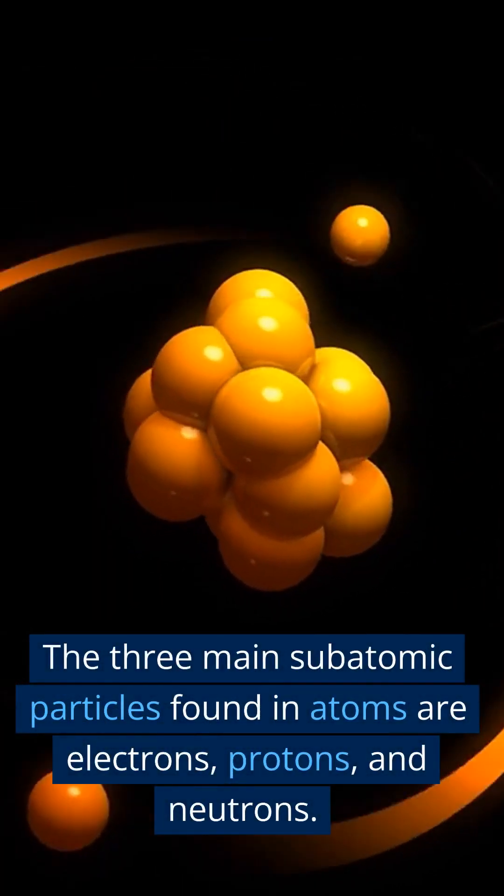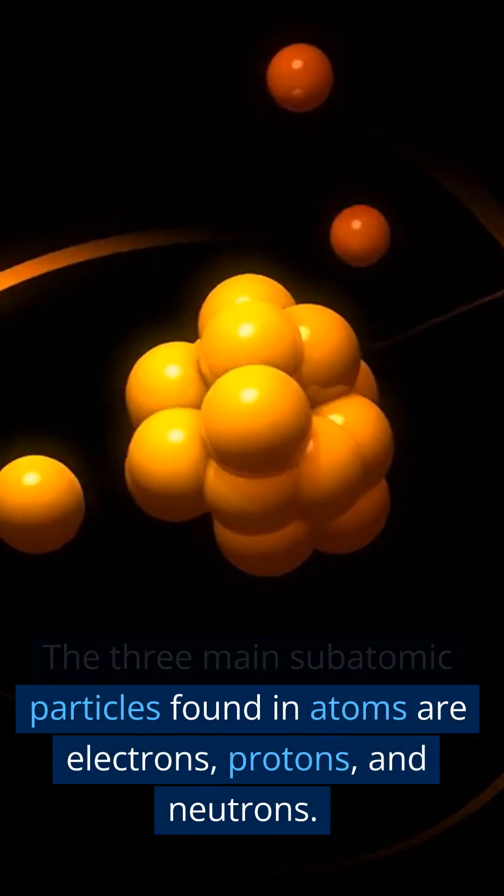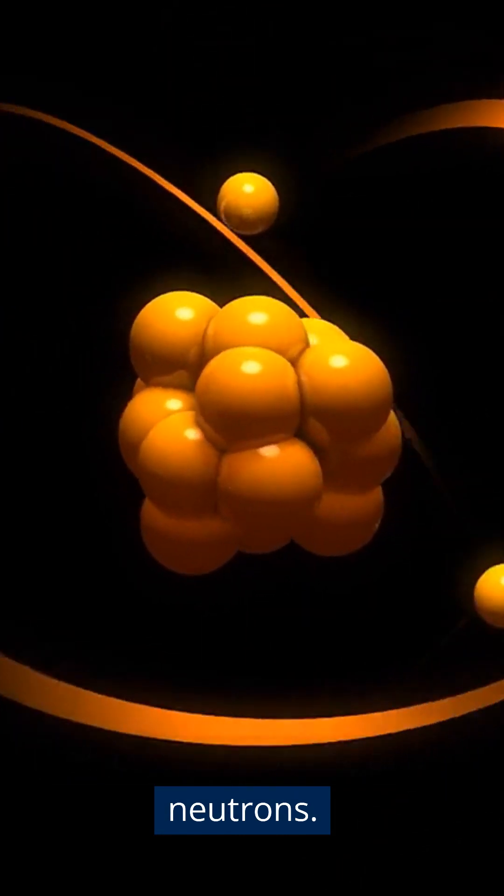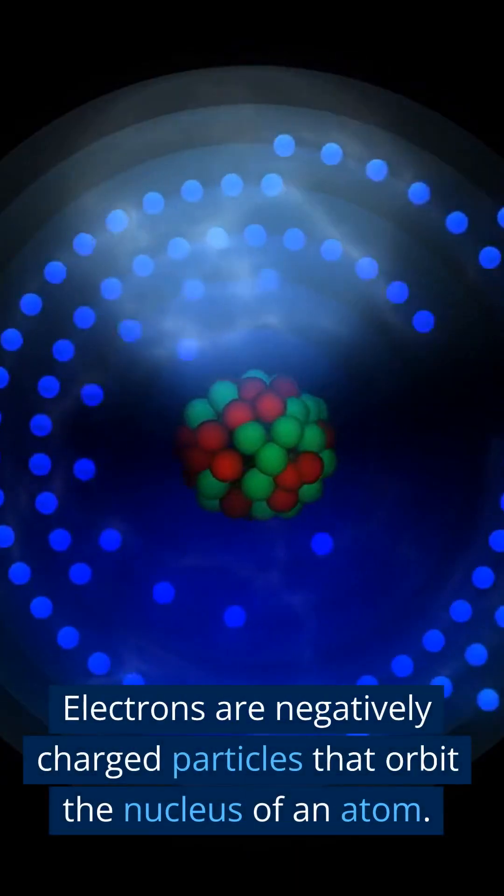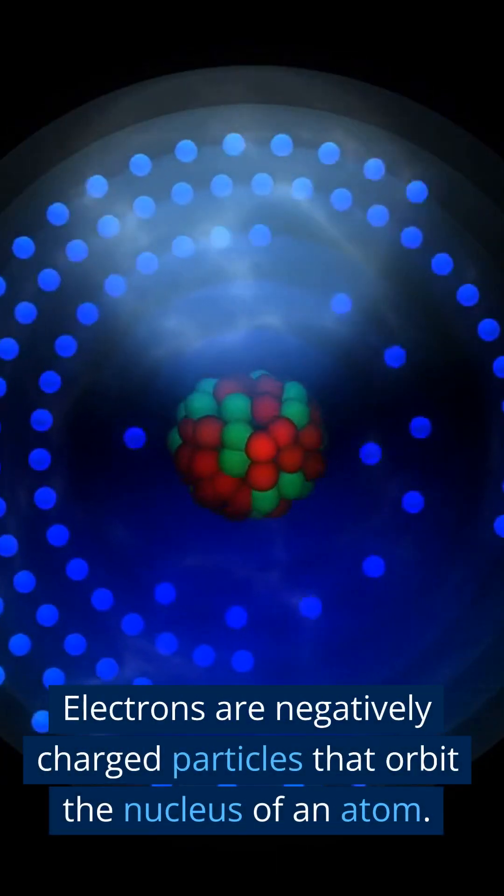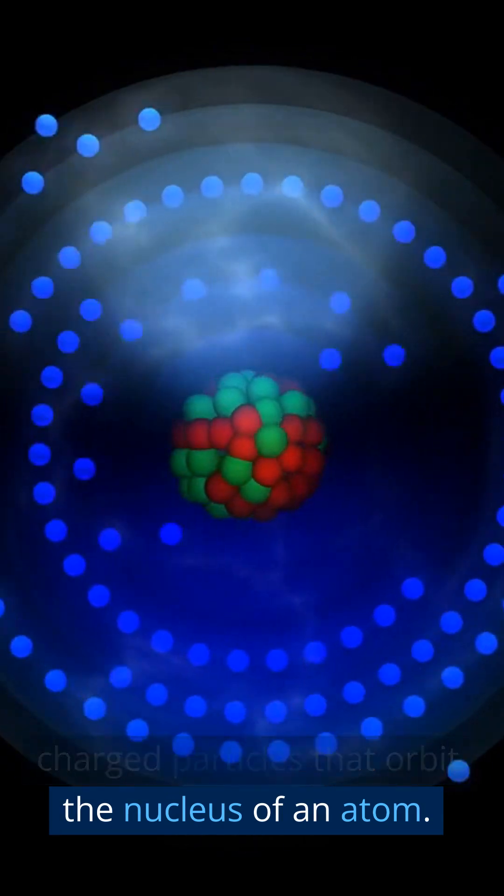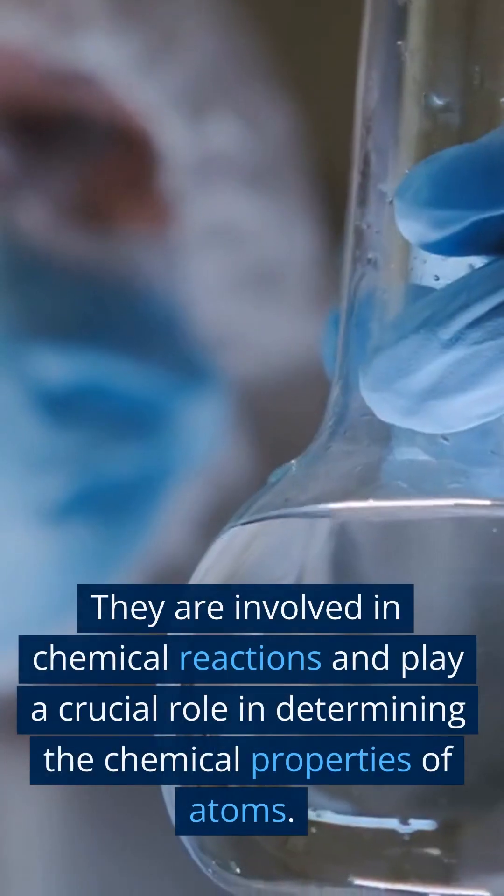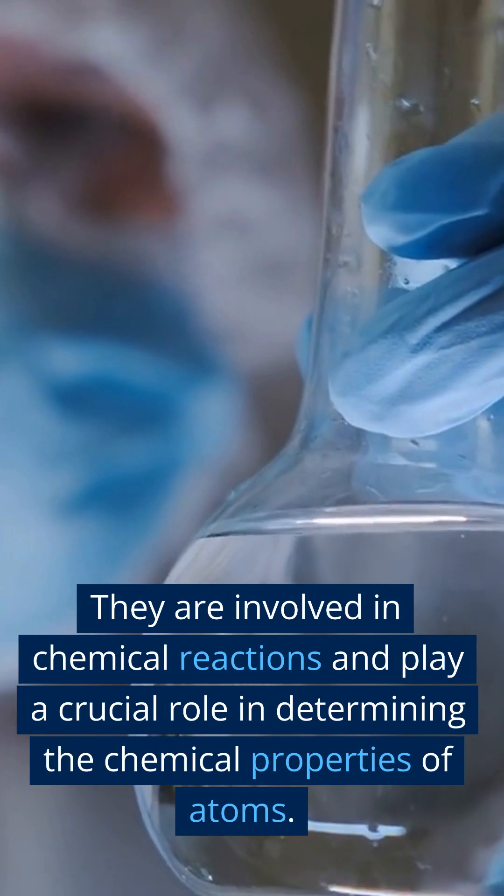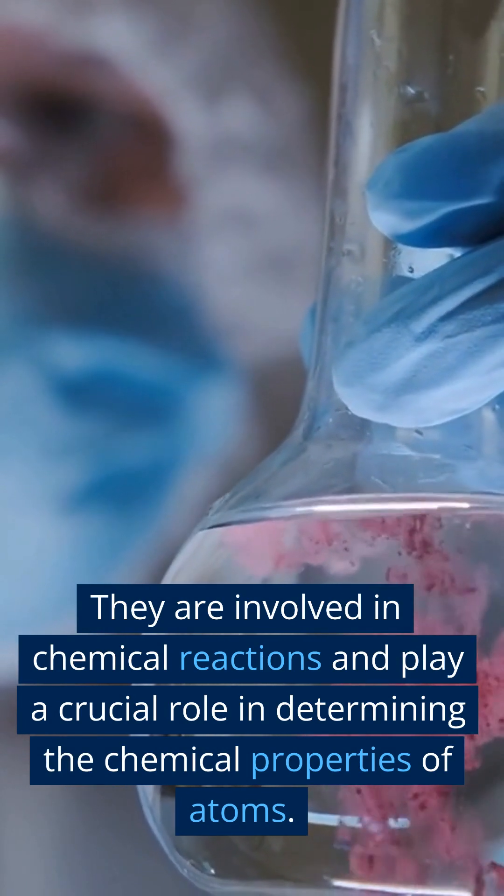The three main subatomic particles found in atoms are electrons, protons, and neutrons. Electrons are negatively charged particles that orbit the nucleus of an atom. They are involved in chemical reactions and play a crucial role in determining the chemical properties of atoms.